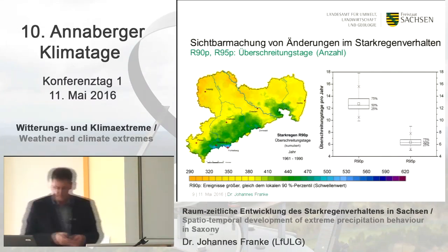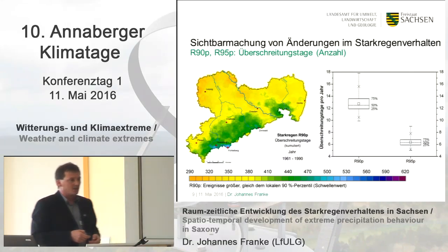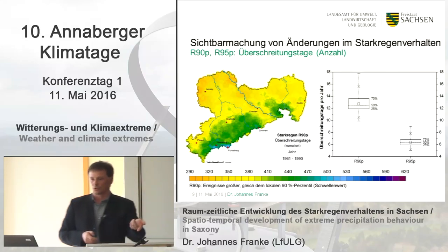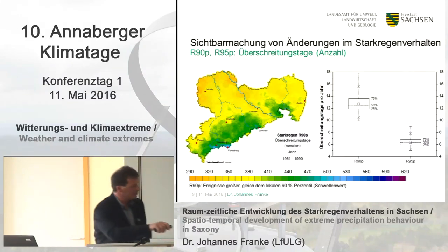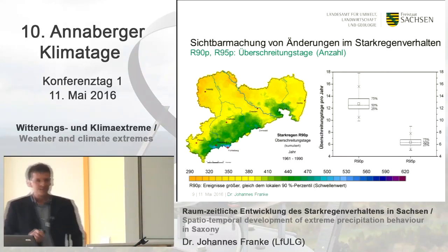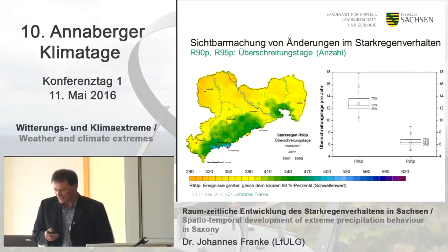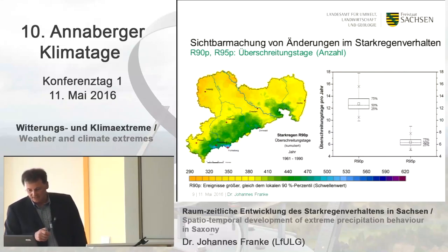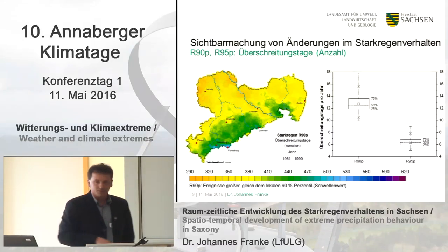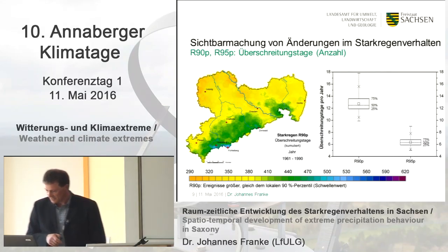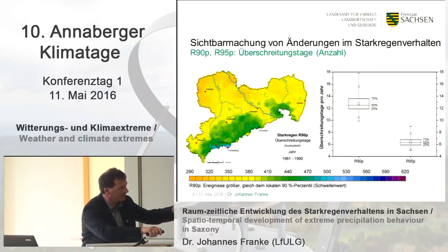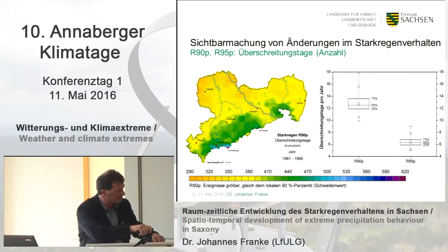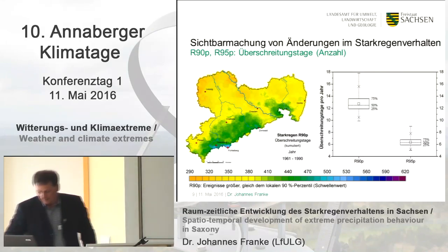On the next map, again for R90P, it shows the days when it was exceeded, when the local threshold was reached or exceeded. This is the cumulative number over the period of 30 years — please look at the box plot, which shows per year. So the probability of occurrence of the R90 percentile is 13 times a year. And of course, the more extreme precipitation extreme is between 6 and 7 times per year. You can also see where it takes place in the area.